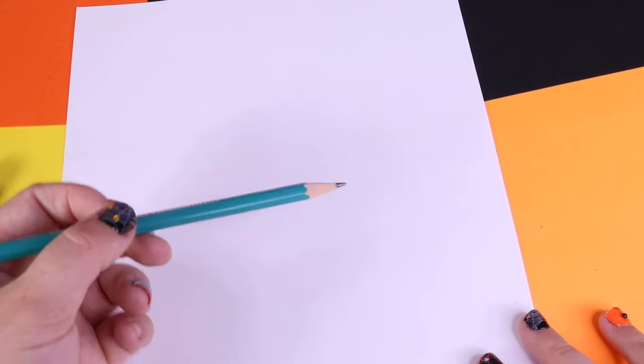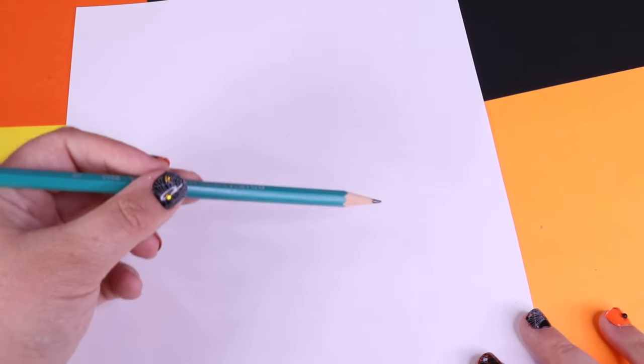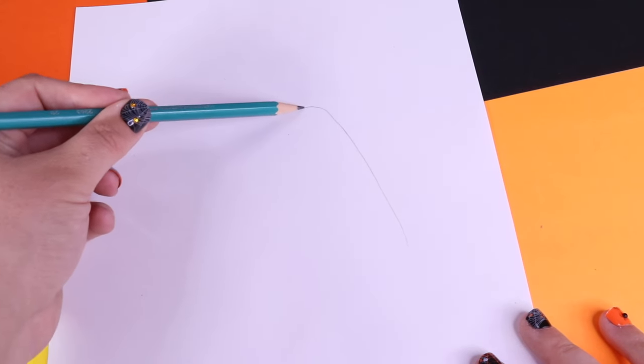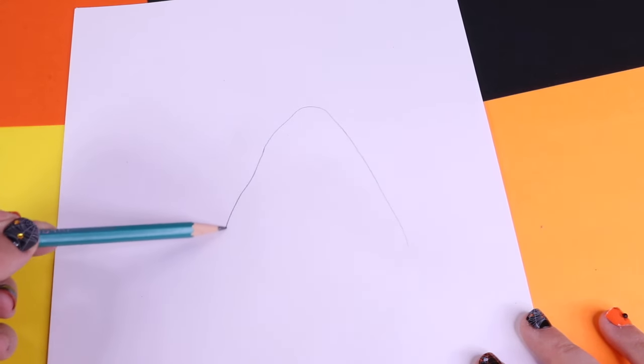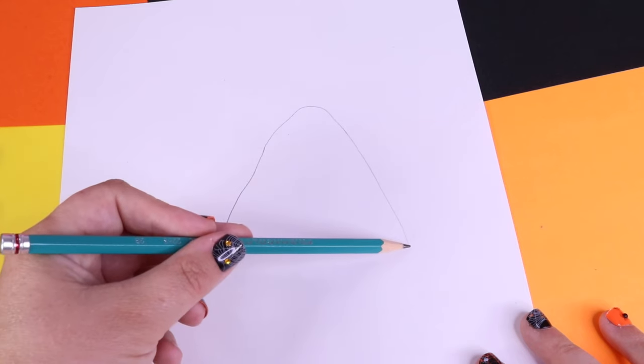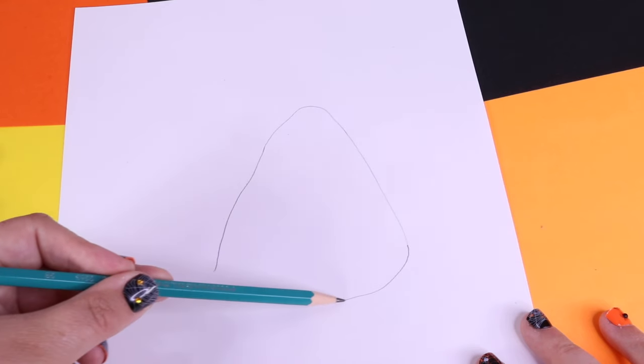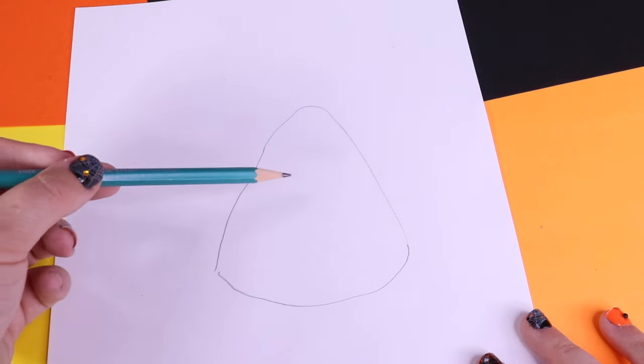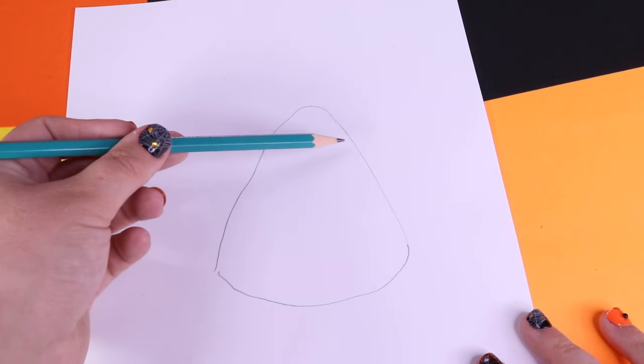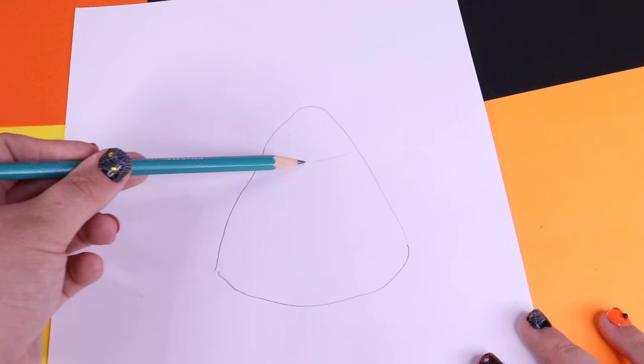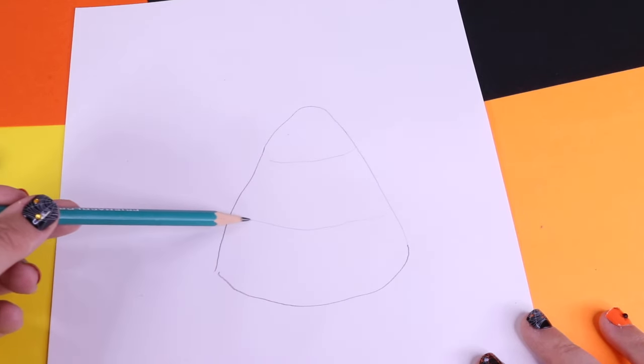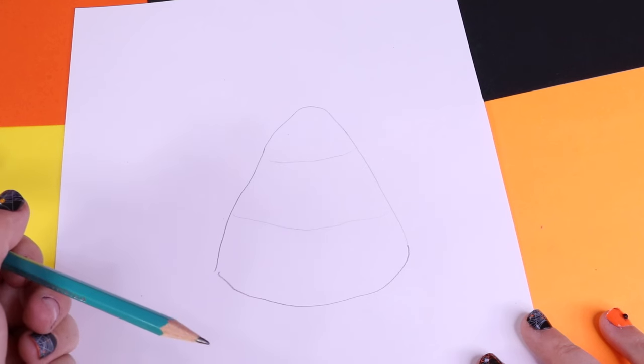And to start off any project we're going to use our pencil and draw a half dome like a mountain right in the middle of our paper. Then we're going to add a little base into the bottom and very lightly add where we want to separate the colors. That's easy so far, right?